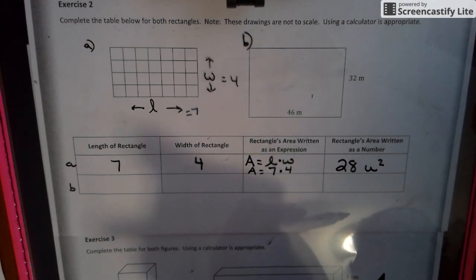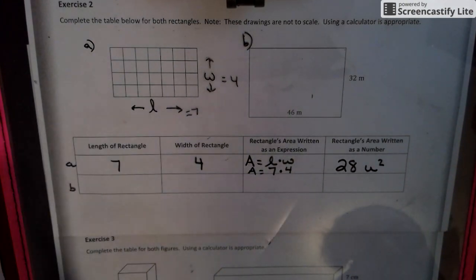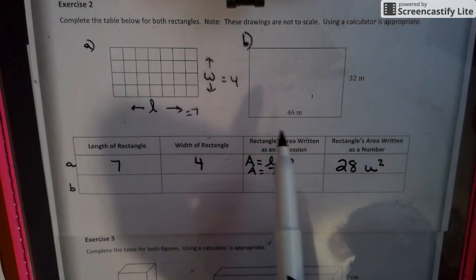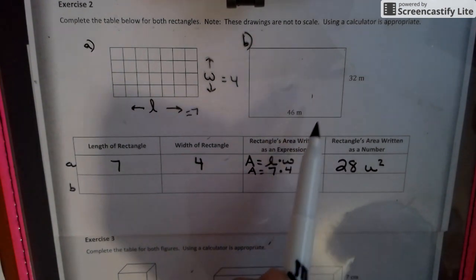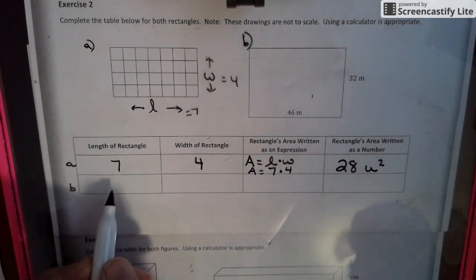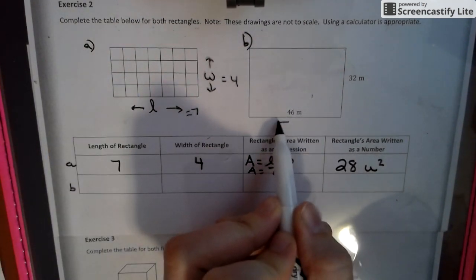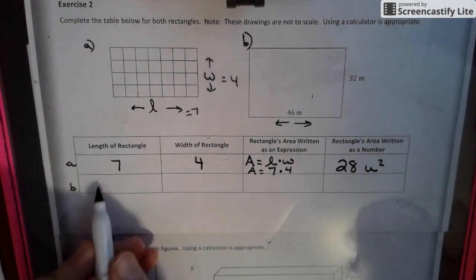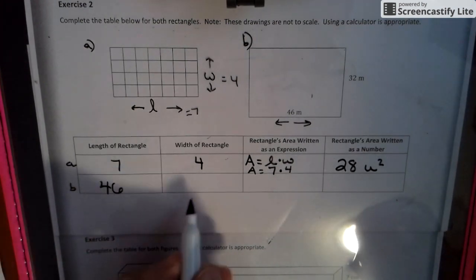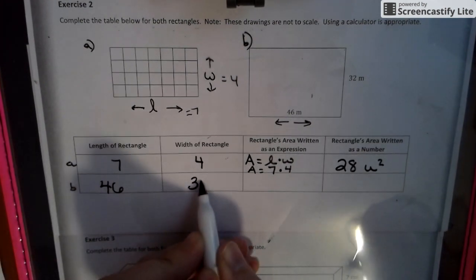When we get to volume, that is three-dimensional, so we'd use a little three. When looking at the other rectangle, when there's not little boxes that we can count, they generally give us a number. On this one, the length is 46 meters and the width is 32.